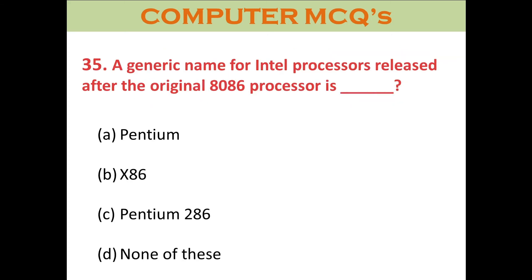Question thirty-five: A generic name for Intel processors released after the original 8086 processor is called — A. Pentium. B. x86. C. Pentium 286. D. None of the above. The right answer is B: x86.